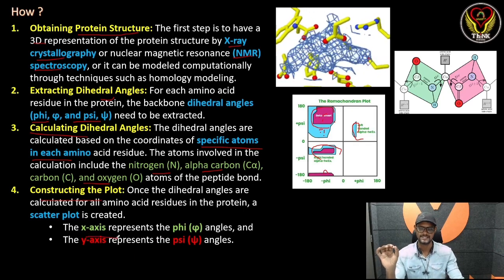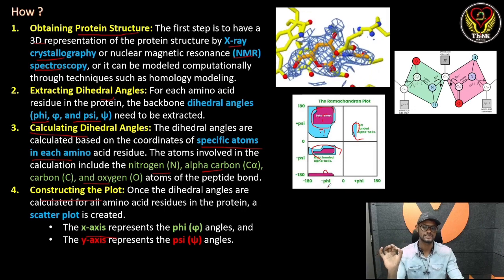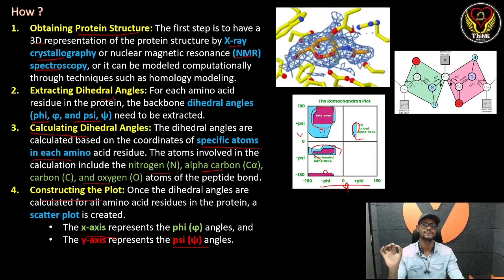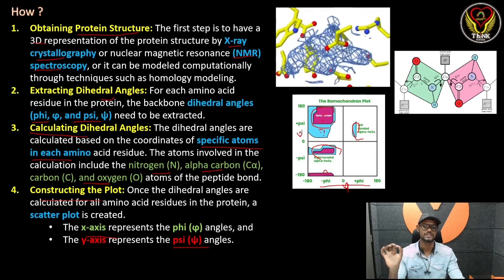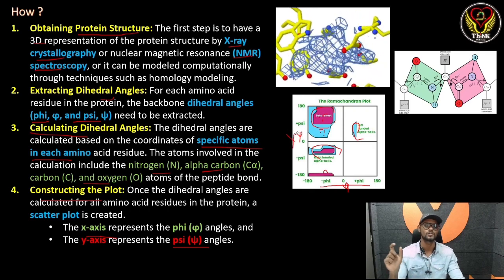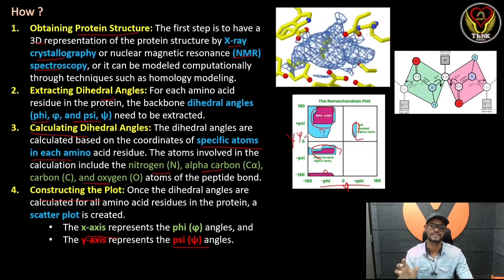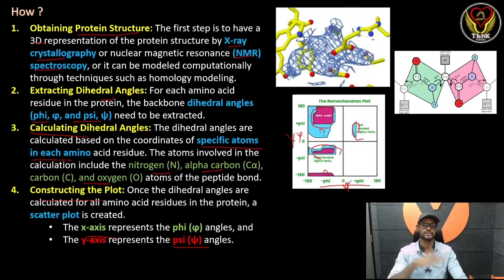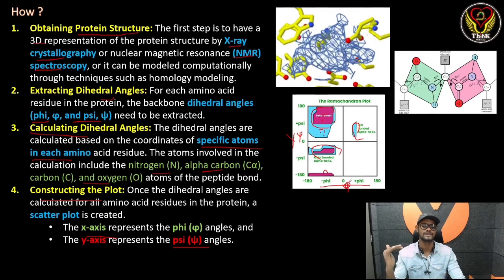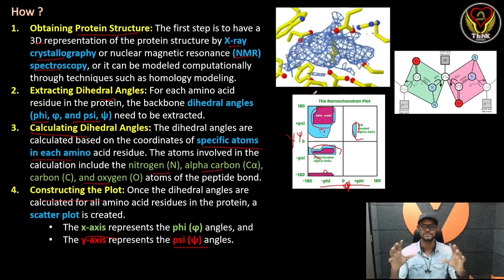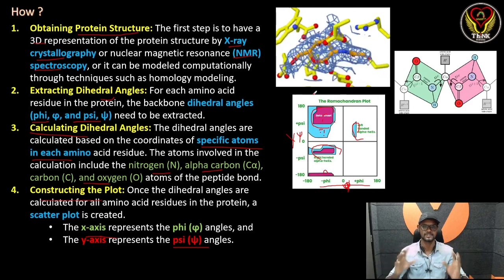On the x-axis, there is phi (φ), and on the y-axis, there is psi (ψ). The y-axis represents the psi angle. The x-axis represents the phi angle. This is the structure of the Ramachandran plot.